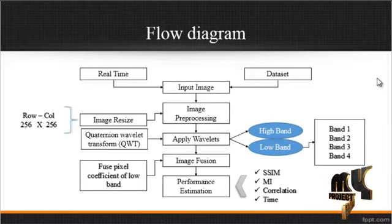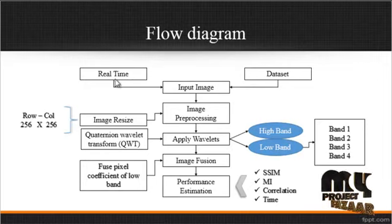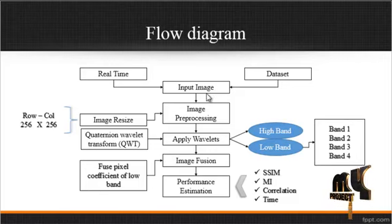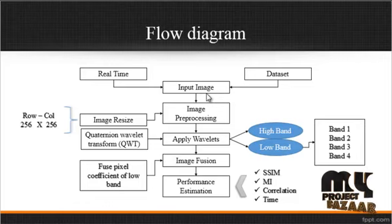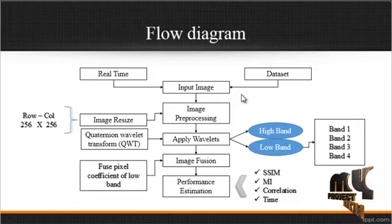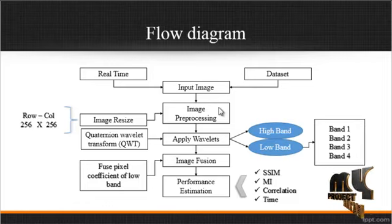Now we are going to discuss about the flow diagram for the process. This is the overall flow structure for the running process. At first, the input image is taken from the datasets. The dataset is divided into two categories: the first one is the real-time data, and the second one is the dataset images. When getting the input from either real-time or from the dataset, after that the pre-processing is carried out.